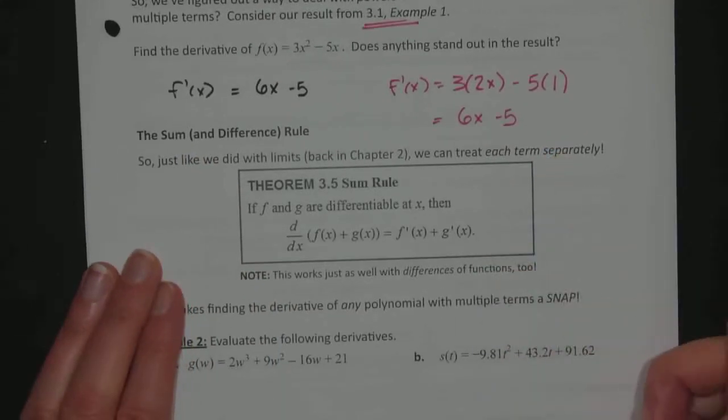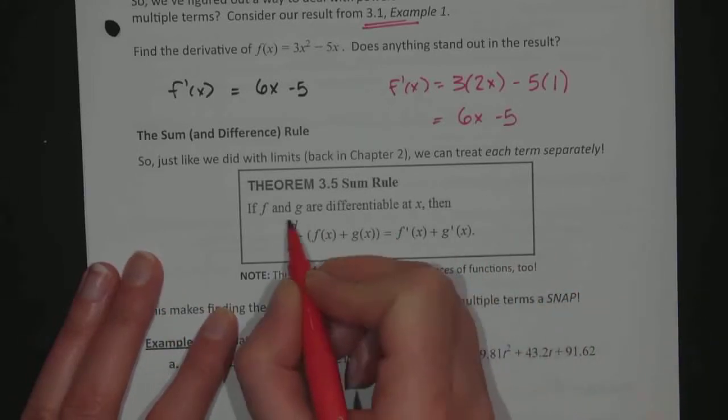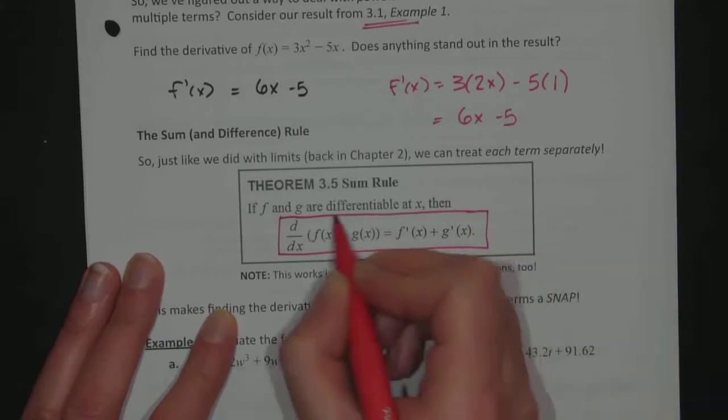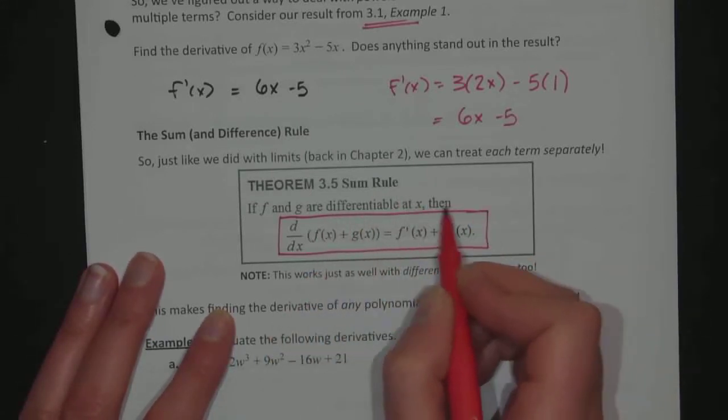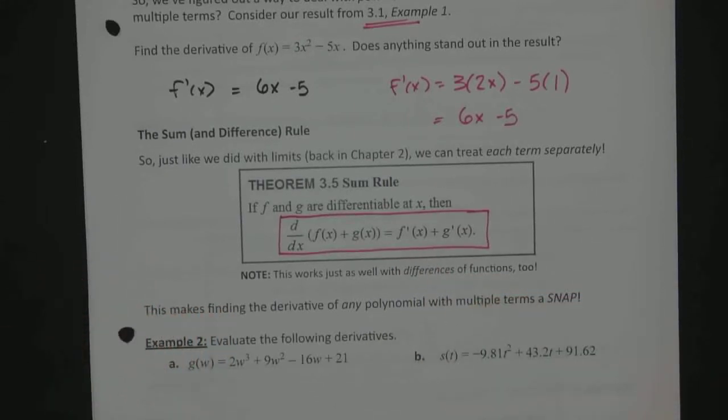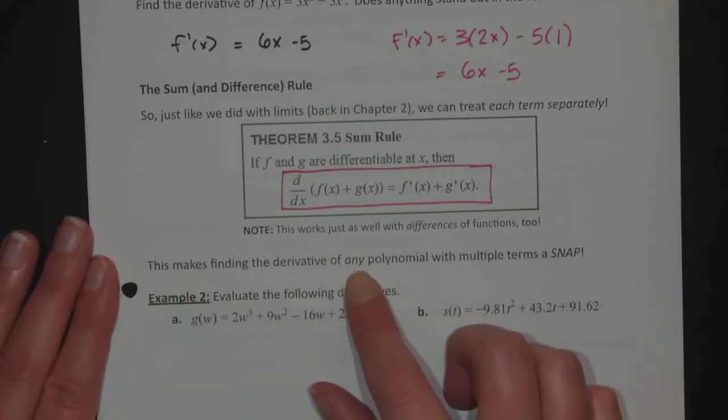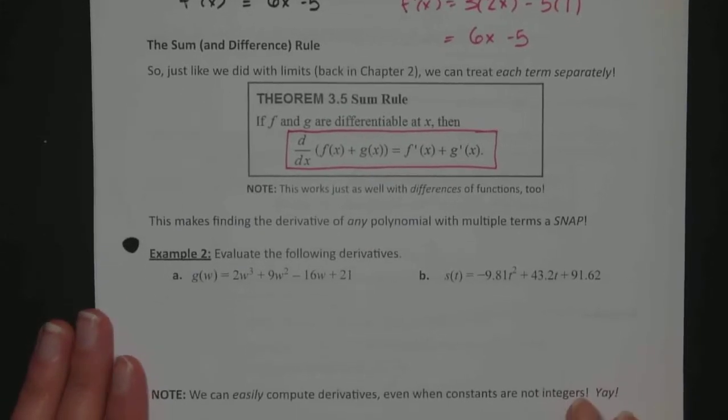That leads us to the sum and difference rule. Just like we did with limits, we can treat each term separately. You can take the derivative of two parts of an expression separately and then add up the results, as long as both are differentiable. If any one part is undefined, then the whole sum is going to be undefined as well. That makes finding the derivative of any polynomial function easy, because polynomial functions are always continuous, always smooth, no sharp points, so the sum and difference rule will apply for all polynomial functions.